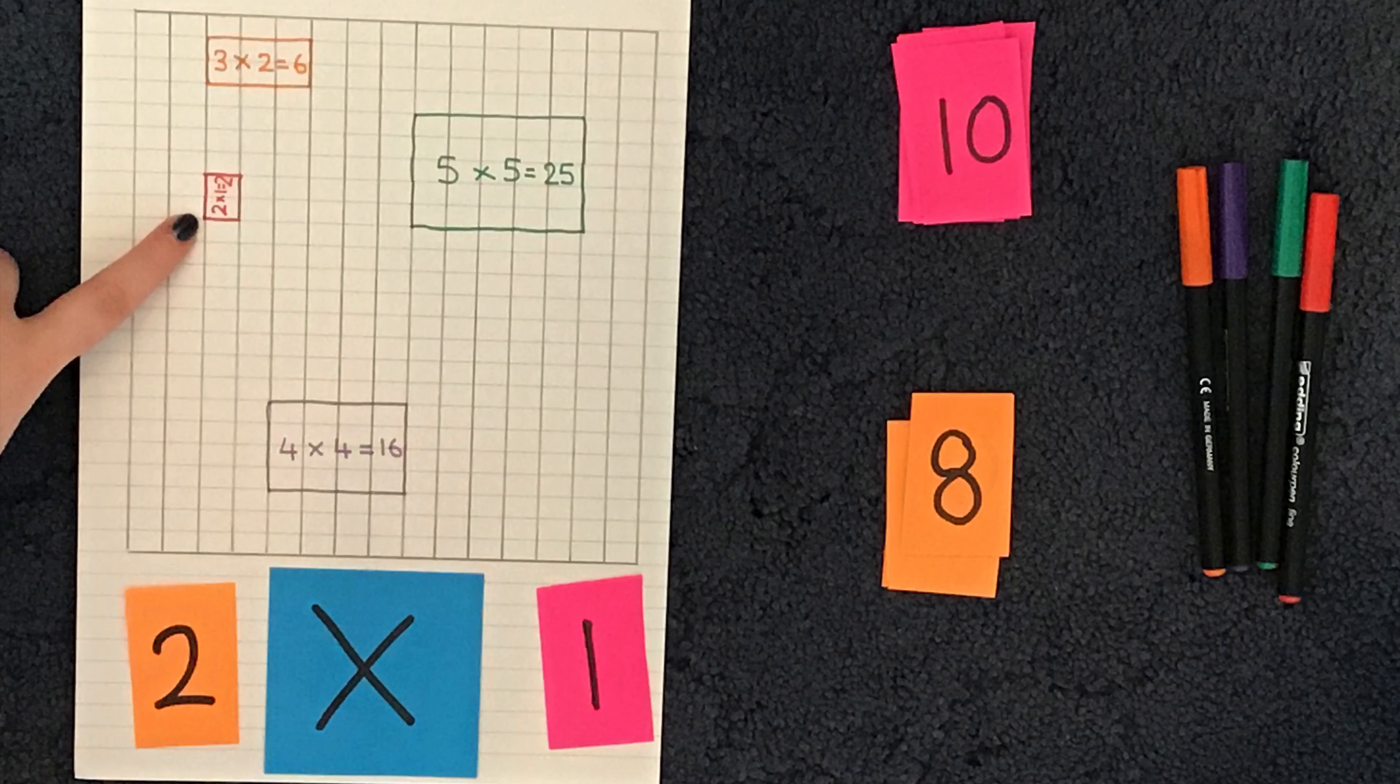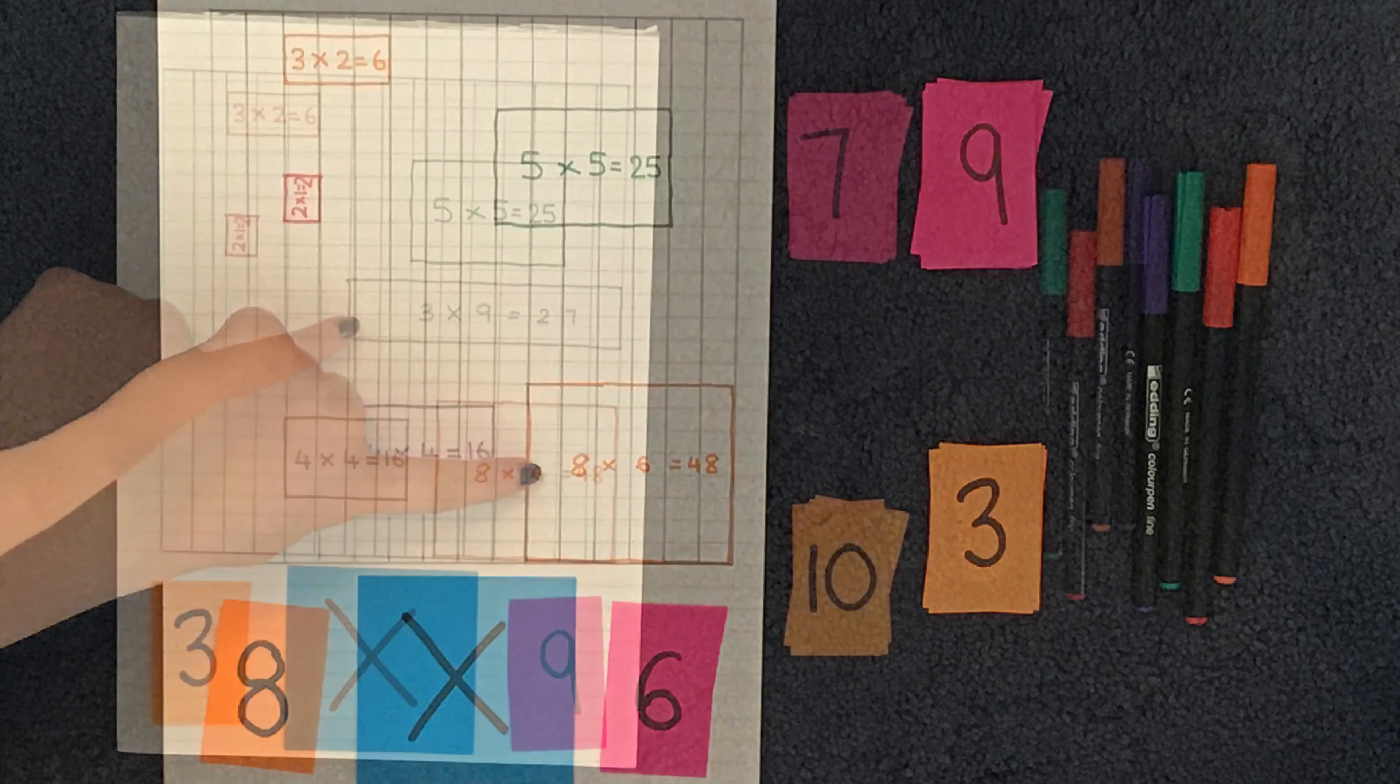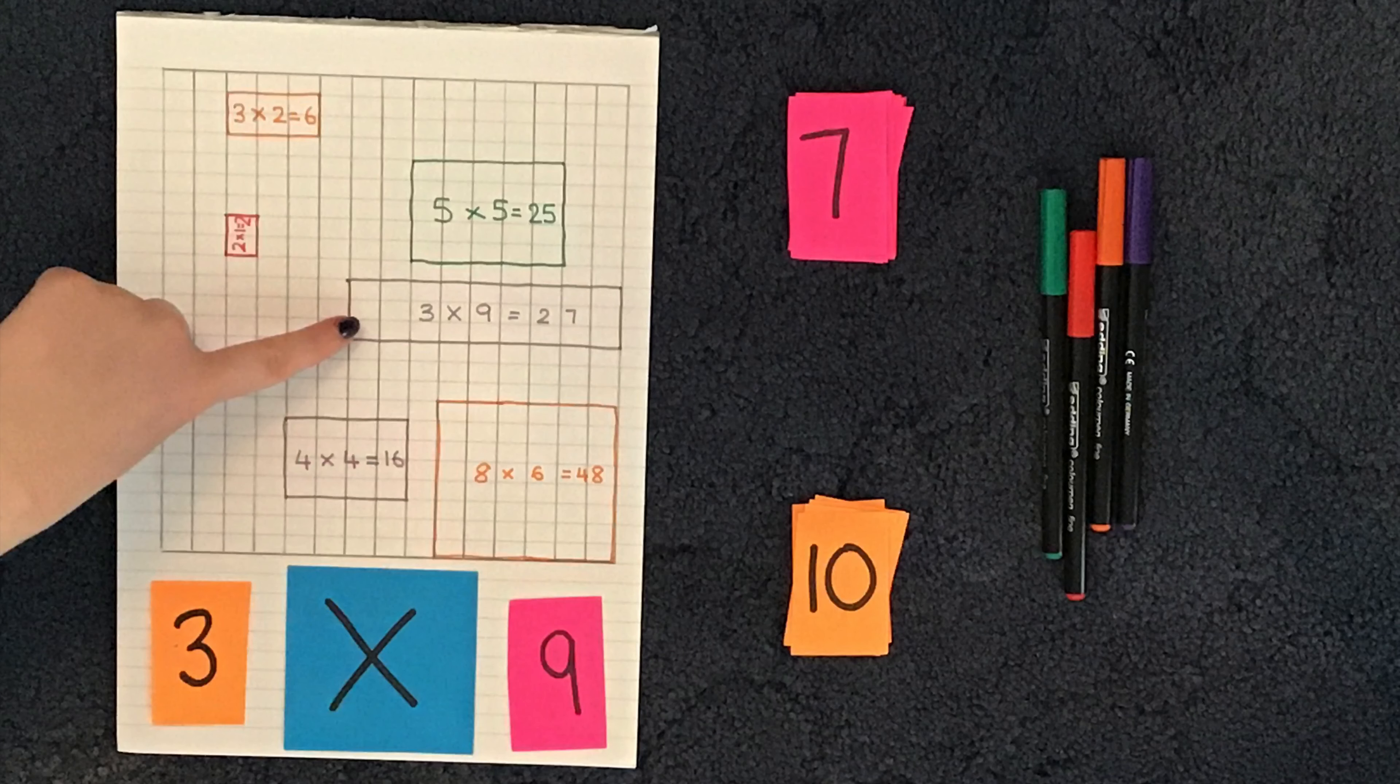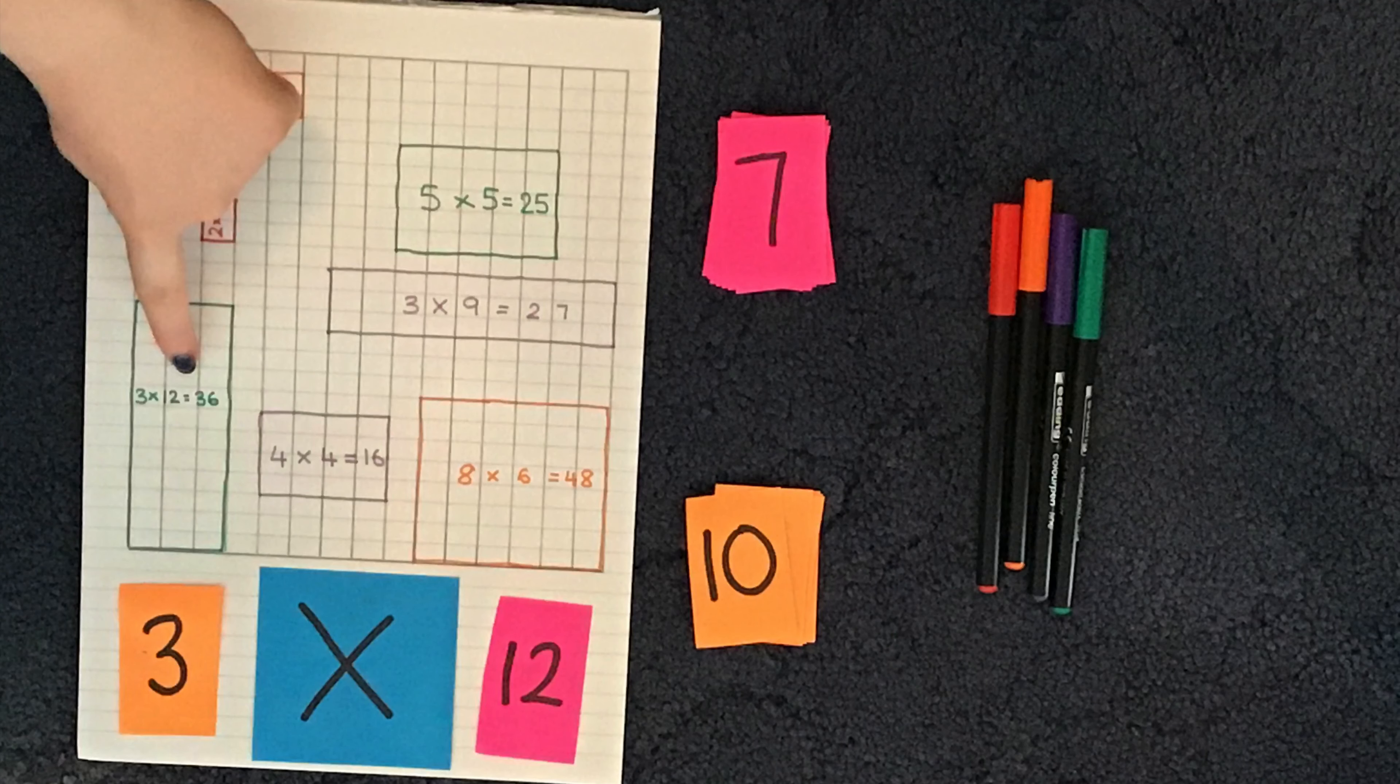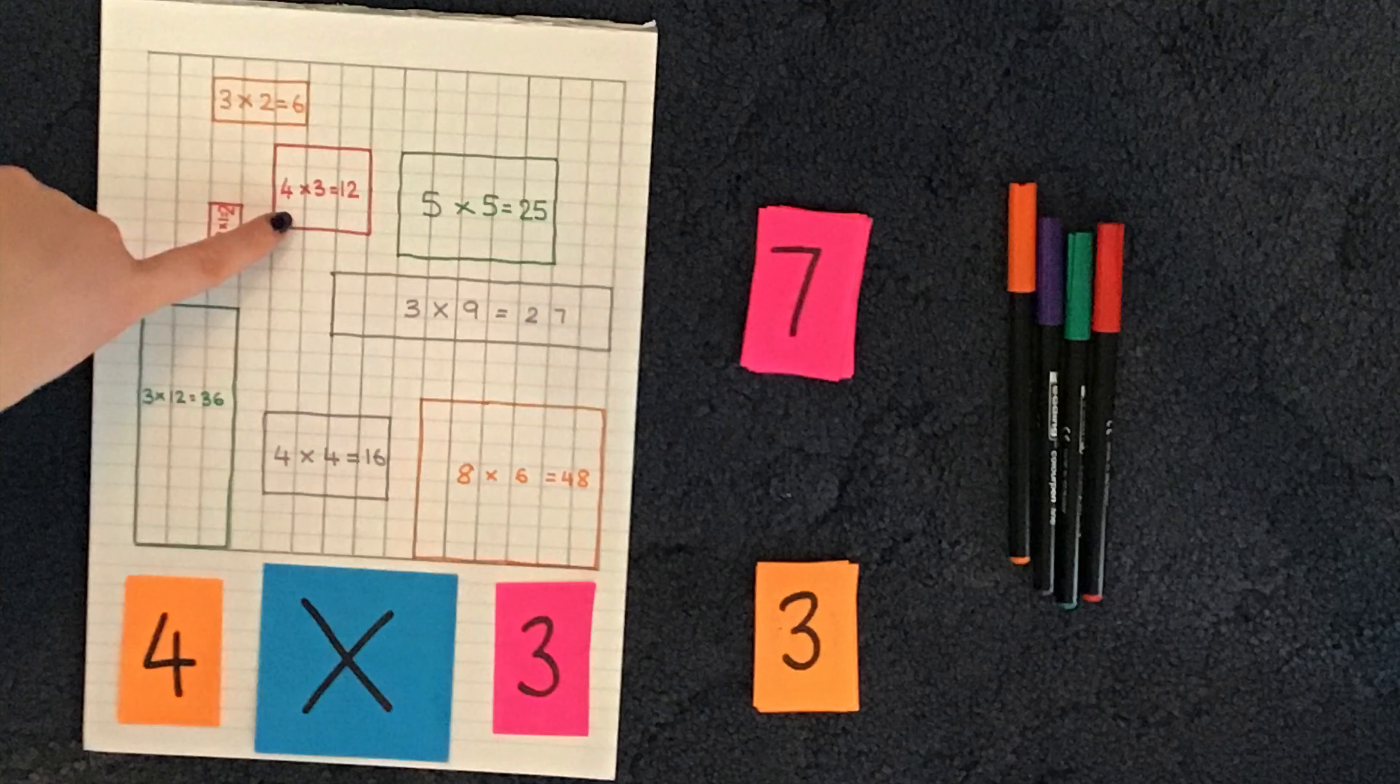As you can see, I've continued to select different cards in order to create different multiplication calculations. Once I have drawn my calculation on my grid, if I didn't know the answer or was unsure about the answer, then I can check it by counting the individual rectangles inside that shape, and then that would give me the answer. But then I must remember to write the answer at the end of my calculation.